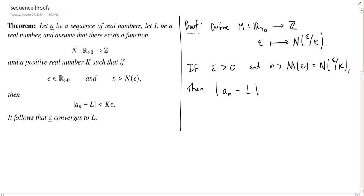then what happens to the difference between the nth term of the sequence and L? Well, because I chose little n past the eventually number for epsilon over K, then I know this is going to be less than,